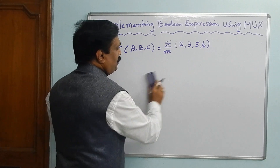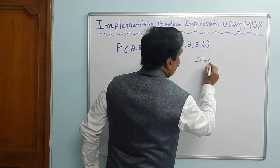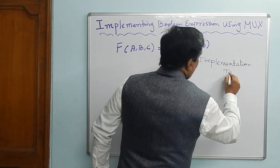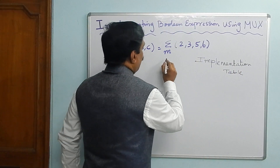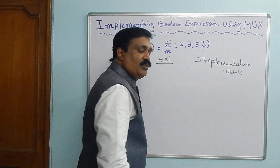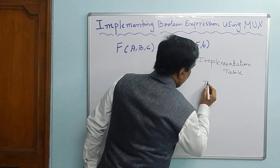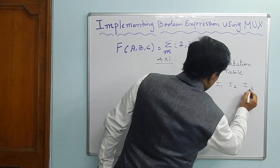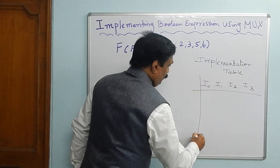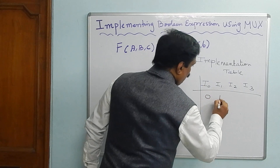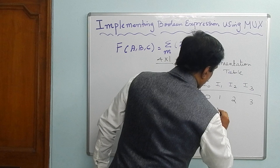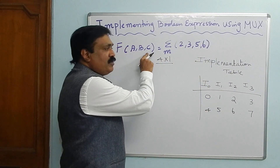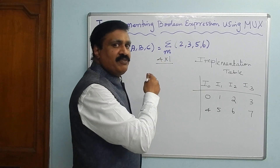For that we have to prepare an implementation table. We are going to implement a 4-by-1 MUX, therefore 4 inputs are required. You take I0, I1, I2, I3, and here you write 0, 1, 2, 3, 4, 5, 6, 7 — that means 8 minterms. Because this is a 3-variable equation, it will have 8 terms, but in the given equation only 4 of them are present.